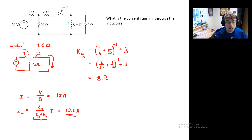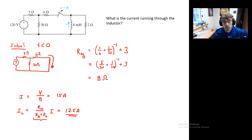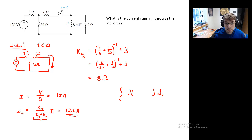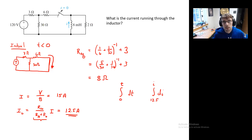We've solved the initial conditions. This also gives you the upper and lower bounds if you're doing an integration. When you put in time equals zero, you'd use 12.5 as the lower limit. Now let's decide how to treat the circuit once the switch is opened.